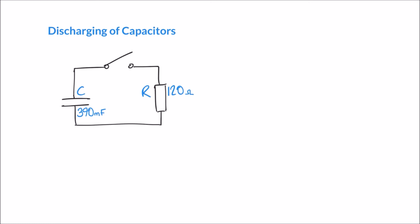In our previous video we introduced the topic of capacitors and talked about how capacitors behave when they charge up in simple circuits. In this video we're going to look at how capacitors behave when they discharge. To illustrate that, I have this simple circuit which contains a capacitor, a switch, and a resistor. We imagine this capacitor has already been fully charged, and when we close the switch a complete circuit is formed and the capacitor is going to discharge.